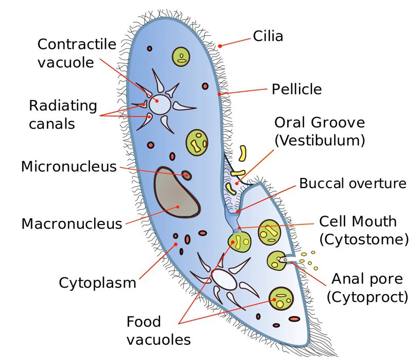The cytopharynx in this way acts much like a straw that sucks macromolecules to the posterior end of the cell. The passage of macromolecules from the entrance of the cytostome to the posterior end of the cytopharynx takes at least two minutes. The cytostome is the main site of endocytosis in Trypanosoma cruzi epimastigotes.